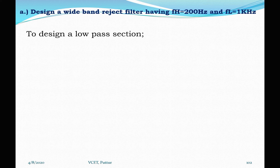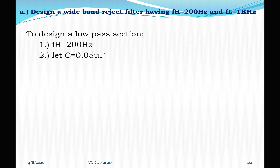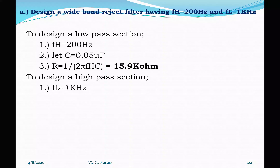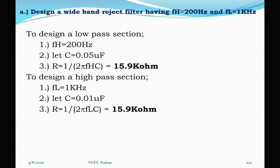To design a wide band reject filter with FH = 200 Hz and FL = 1 kHz: since FL is greater than FH, it confirms a wide band rejection filter. For the low pass section with FH = 200 Hz, assume C = 0.05 μF; then R = 1/(2π × FH × C) = 15.9 kΩ. For the high pass section with FL = 1 kHz, assume C = 0.01 μF; then R = 1/(2π × FL × C) = 15.9 kΩ.